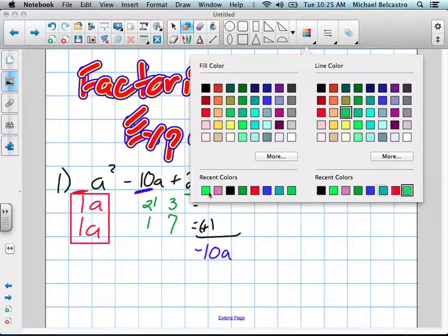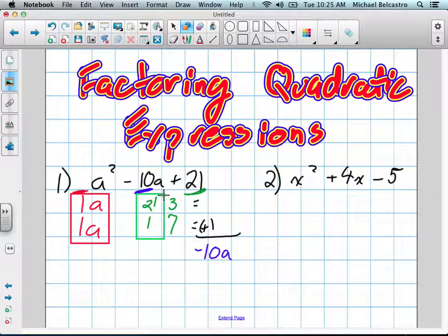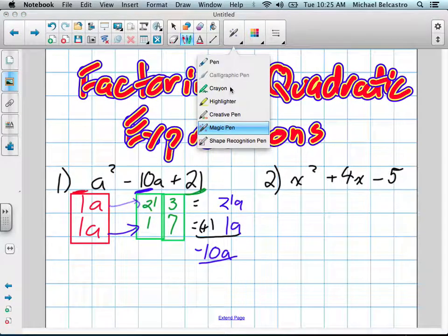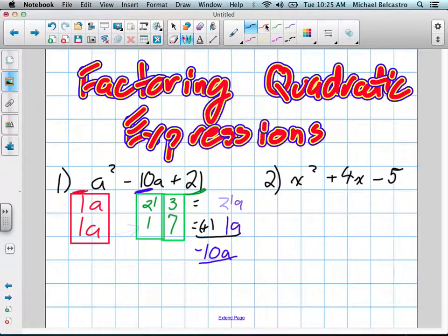I set up my two columns here. With my two columns, I use my trial and error method. 1a times 21, 1a times 1, gives 21a and 1a. Any combination of that can give me negative 10? No. We know that first column is definitely not going to work. And if we went across, it would make no difference.